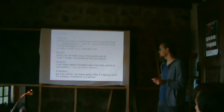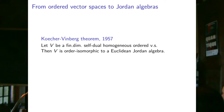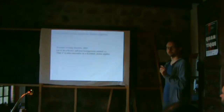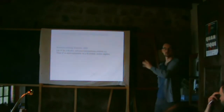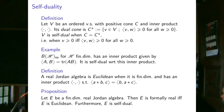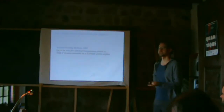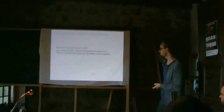Why discuss homogeneity and self-duality? Because of a really cool theorem — the proof is apparently even on Wikipedia. If I have a finite-dimensional self-dual homogeneous ordered vector space, then V is order-isomorphic to a Euclidean Jordan algebra. This is a completely order-theoretic characterization: just from the order structure, you get the Jordan structure for free.